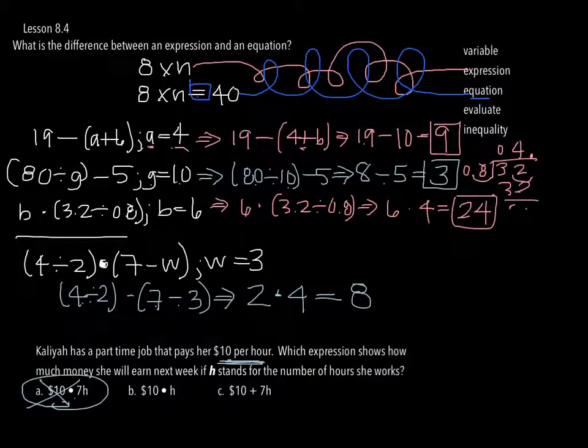And that being said, we can get rid of this one too, because it's not an addition. You're not going to take, well, I work 7 hours, so I'm going to add $10 for 17. No, for every hour you work, you get $10. So the correct answer, boys and girls, is going to be B, $10 times H.